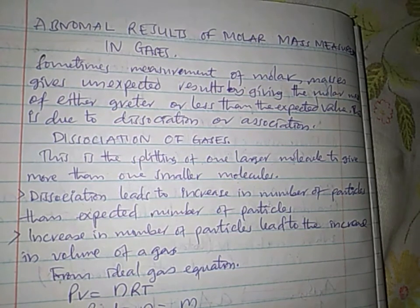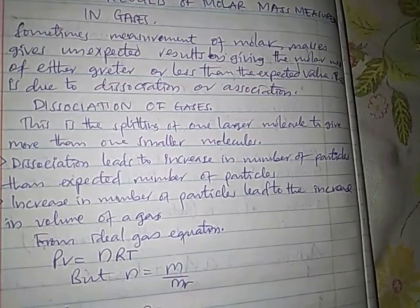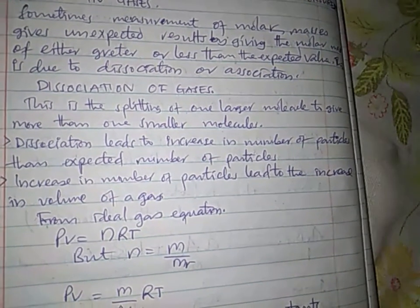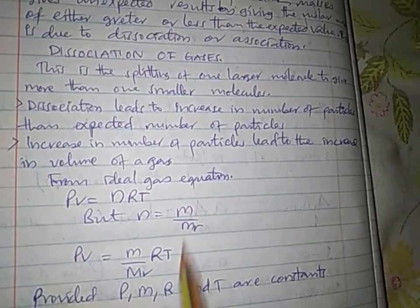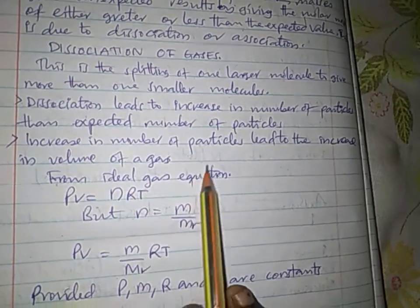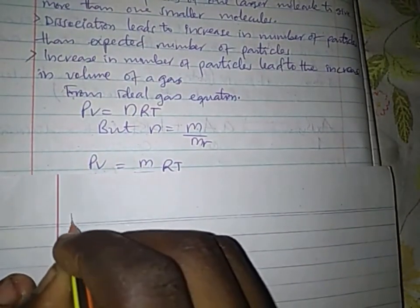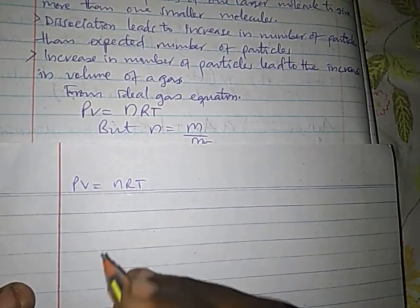Sometimes measurement of molar masses gives unexpected results, giving a molar mass either greater or less than the expected value. This is due to dissociation or association of gas molecules. Today we will look at dissociation and association of gases along with related calculations. Firstly, let's look at the concept of dissociation: dissociation is the splitting of one larger molecule to give more than one smaller molecule. Dissociation leads to an increase in the number of particles, which leads to an increase in the volume of the gas.